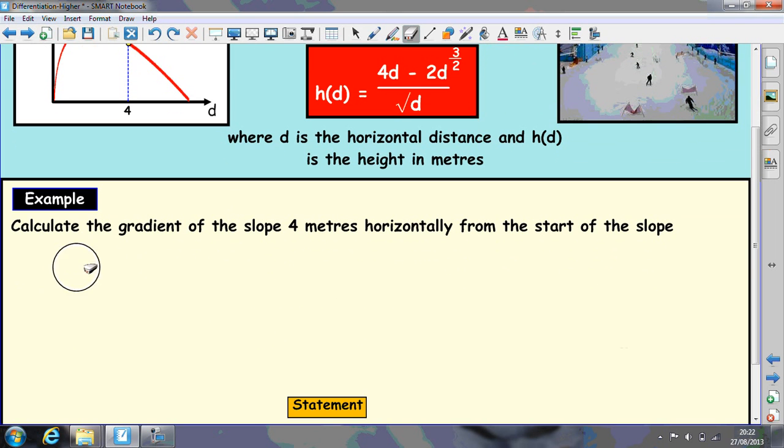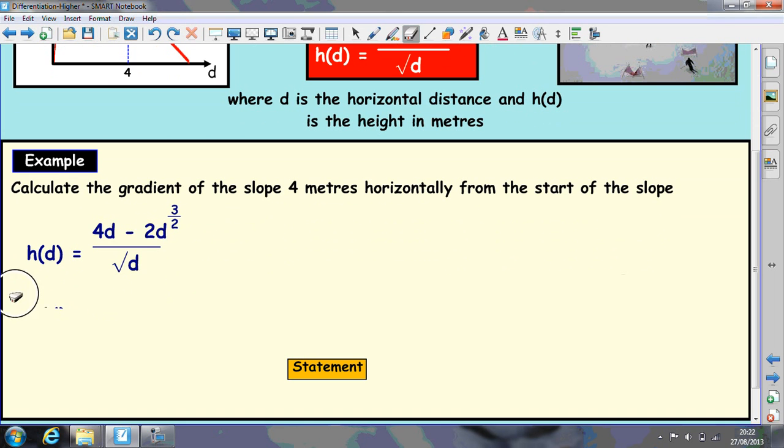So we take our function here and we do as we've done in the other examples. Change your roots into fractions and then split it up. So I've changed that into d^(1/2) and I've taken the 4d over this, take away the 2d^(3/2) over this.